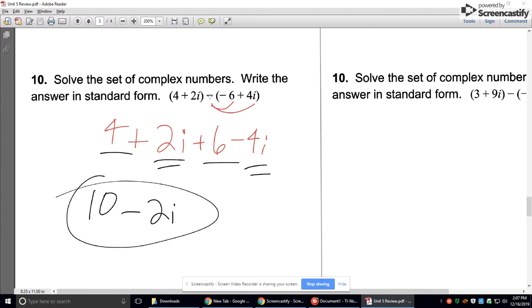Now, number 10. This is a subtraction problem. So distribute the negative to the right. So this turns into plus 6. This turns into negative 4i. Combine like terms. 4 and 6 are like terms. That makes 10. 2i, negative 4i, make negative 2i. That's all there is to say about number 10.